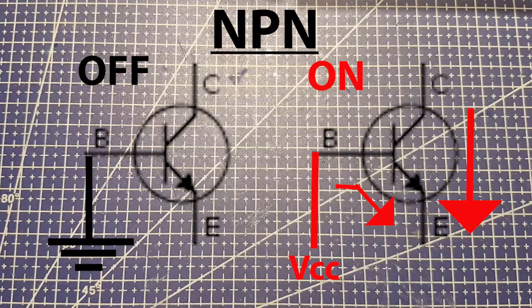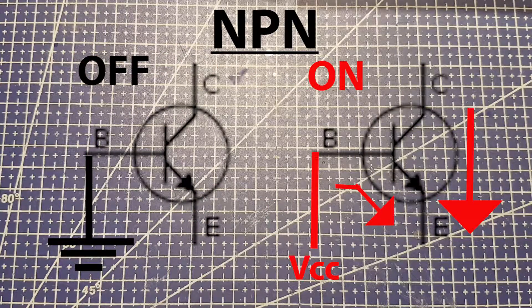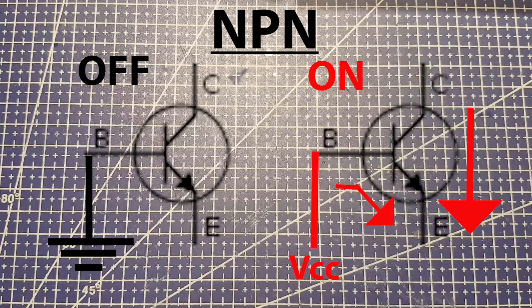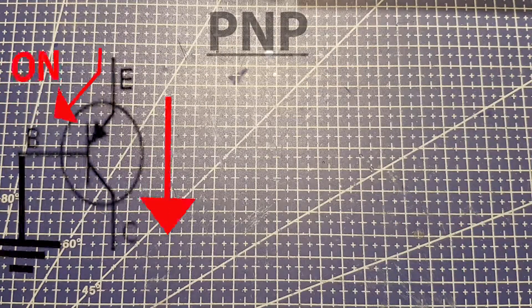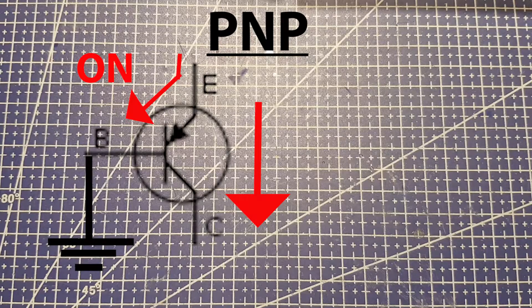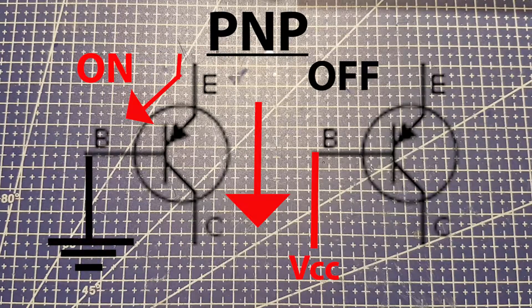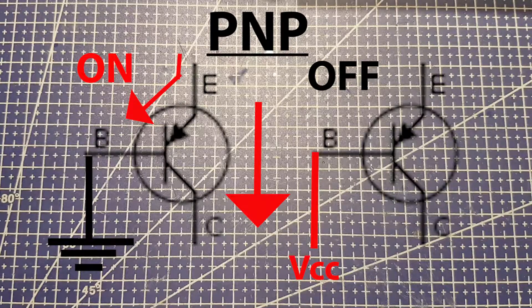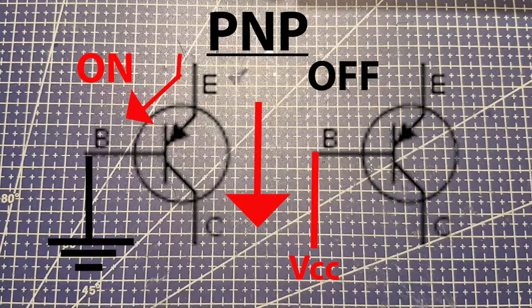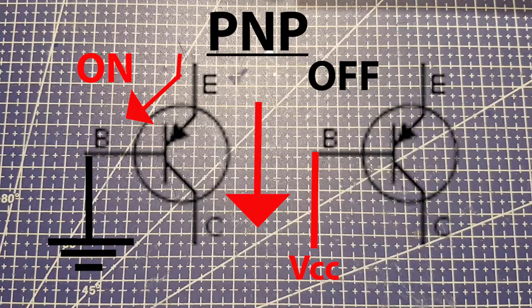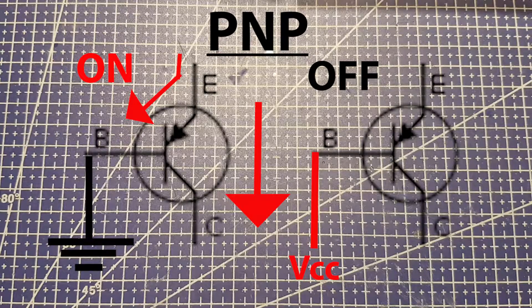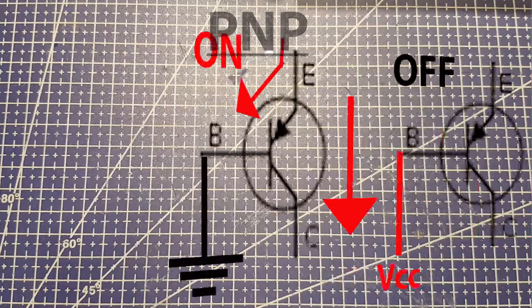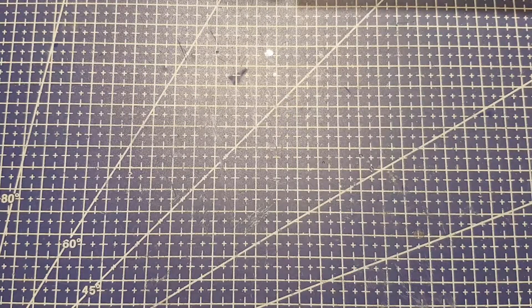So the transistor will be off with no current and on when you apply a current if we're talking about the NPN type. The PNP type is reversed. When you apply a current, the transistor turns off. And also the collector and emitter are the other way round in a PNP. The current actually flows from the emitter to the collector. And you can tell this by the arrows on the electrical symbol.